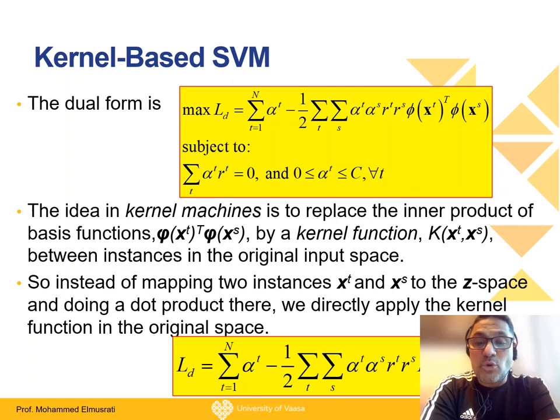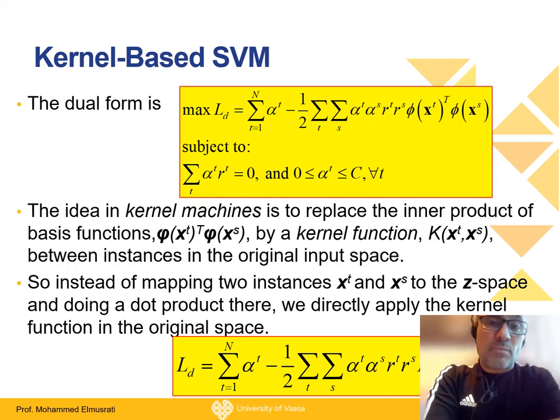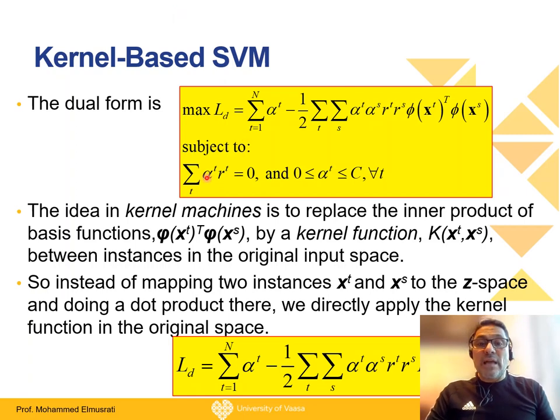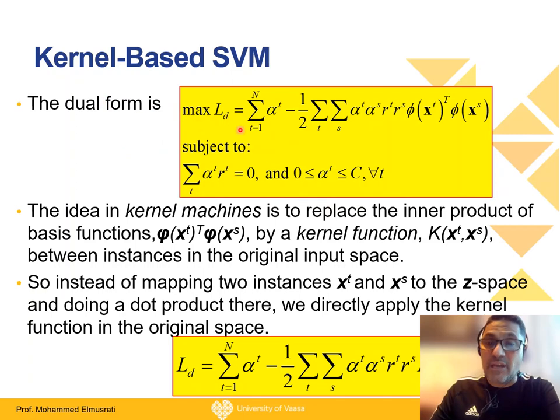So I will show in this short video how to solve a simple example with kernel-based support vector machines. As we explained in the lecture, the support vector machine can be obtained by maximizing the dual form of the optimization problem. We have this constraint that should be achieved, and then we replace this inner product by the kernel function.